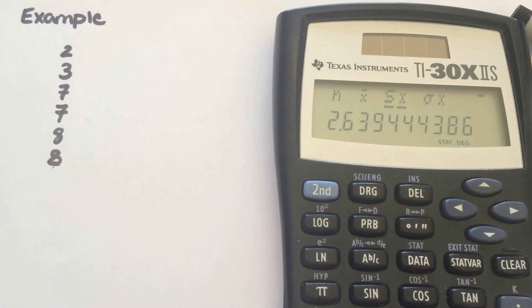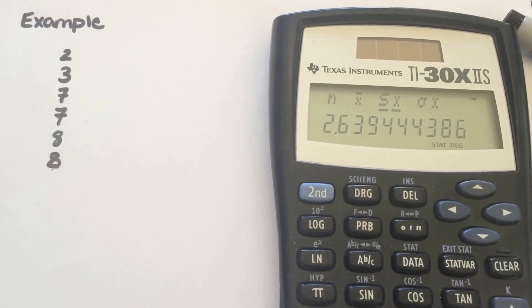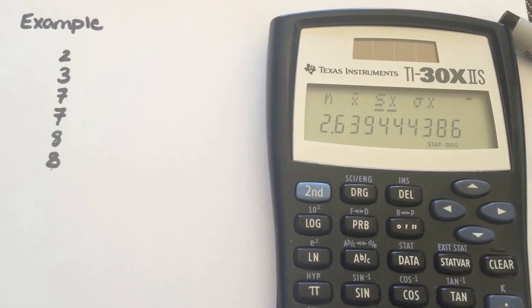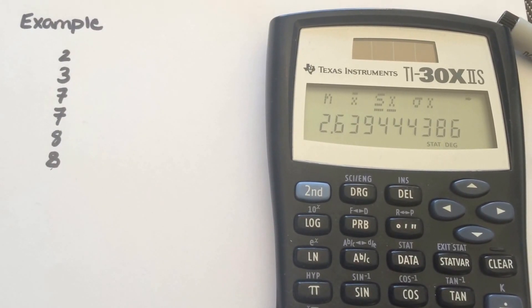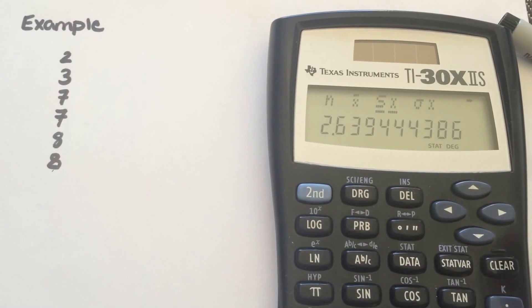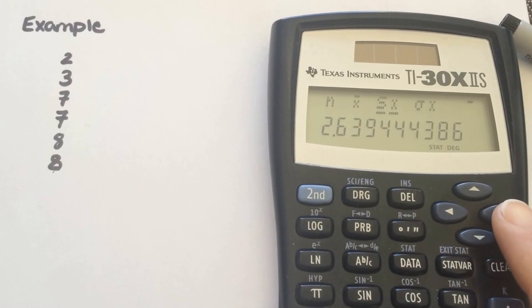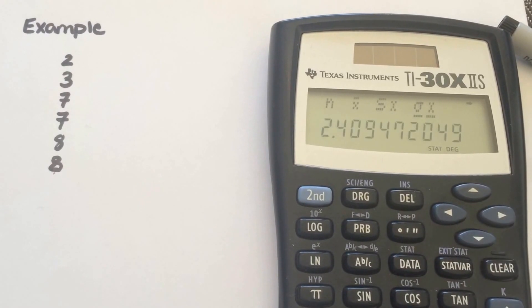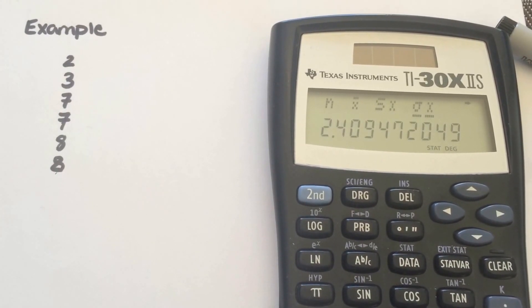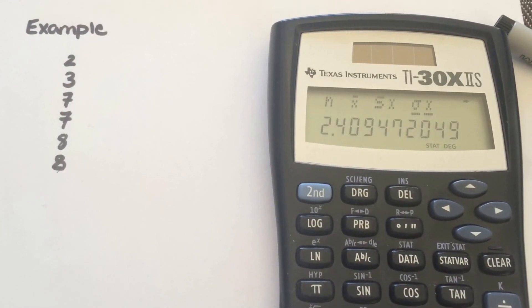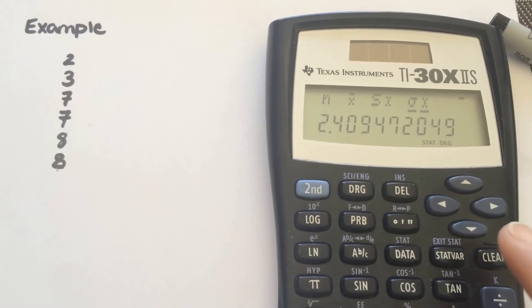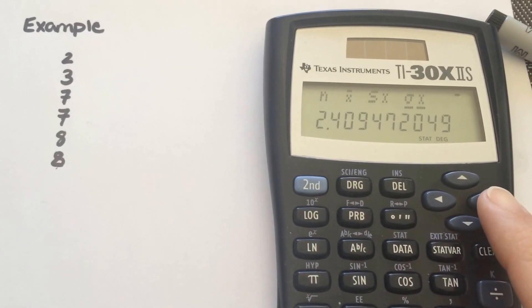That's your sample standard deviation. And there's your population standard deviation, which is 2.409472049. So it gives you quite a bit of decimal places.